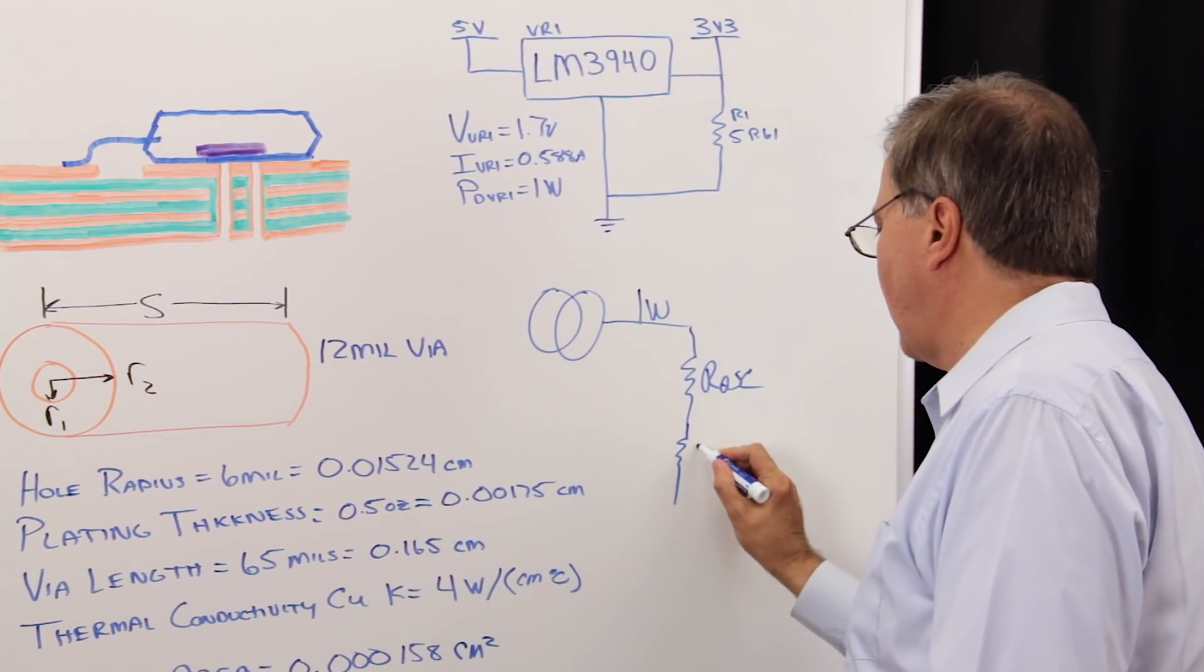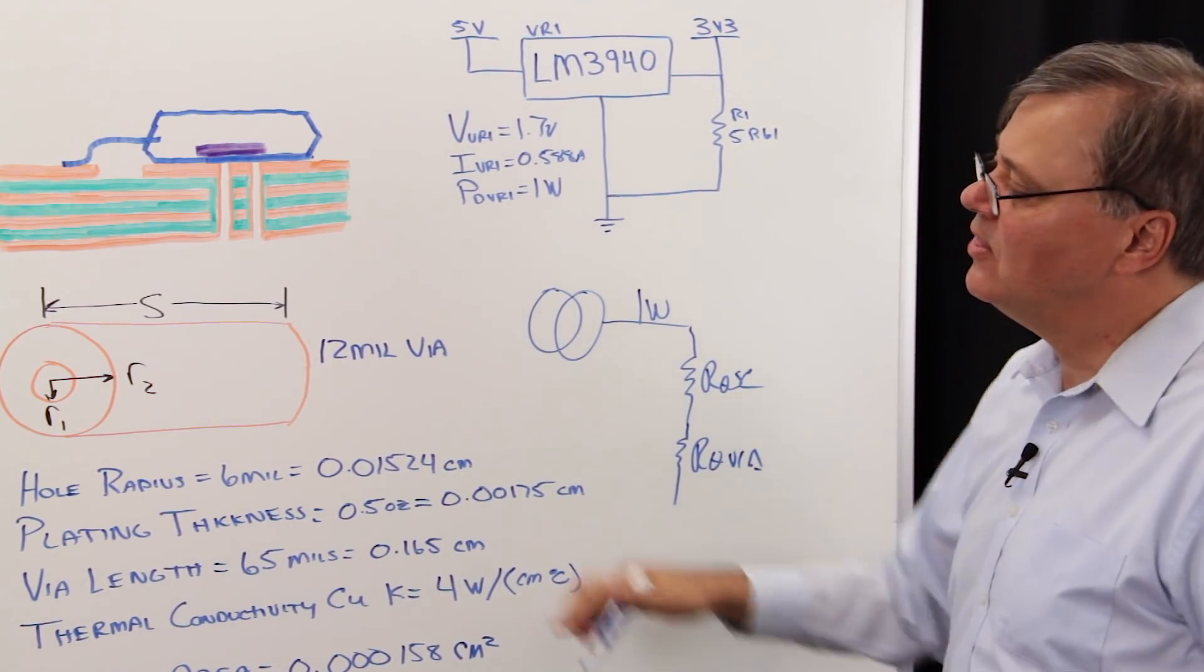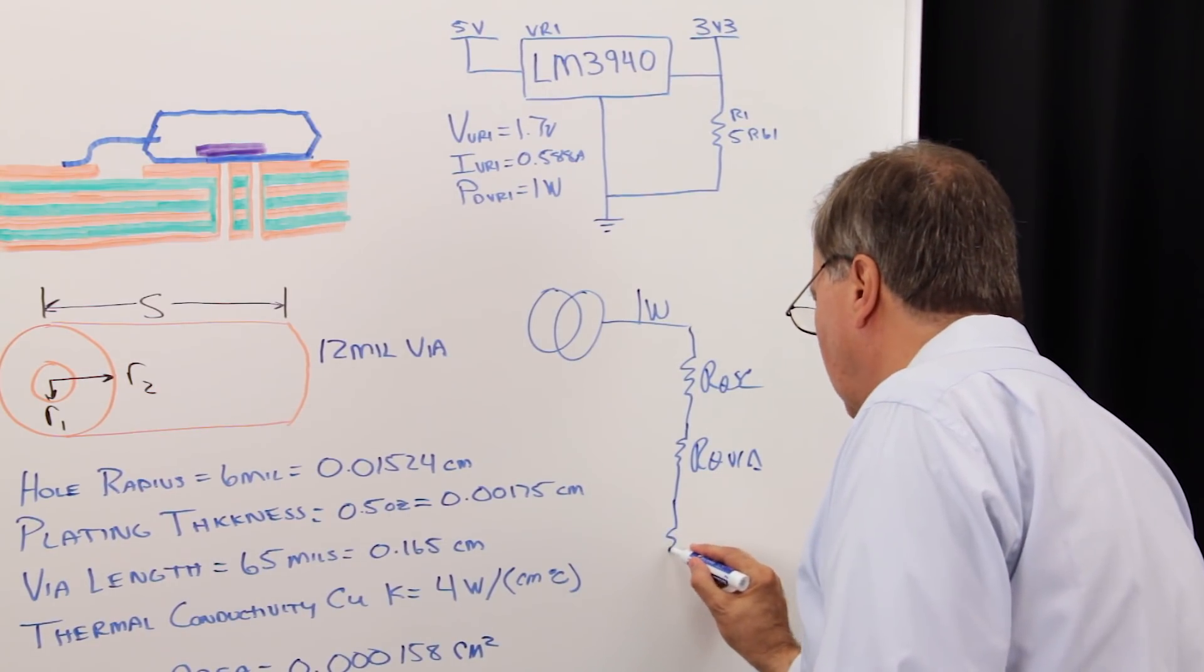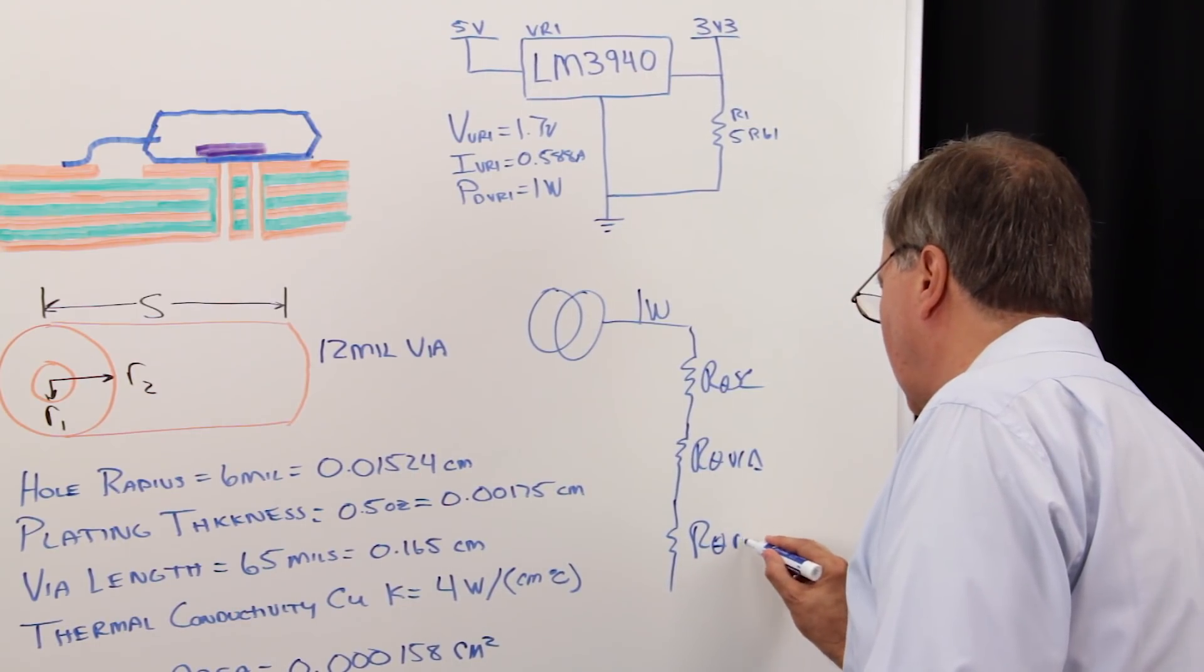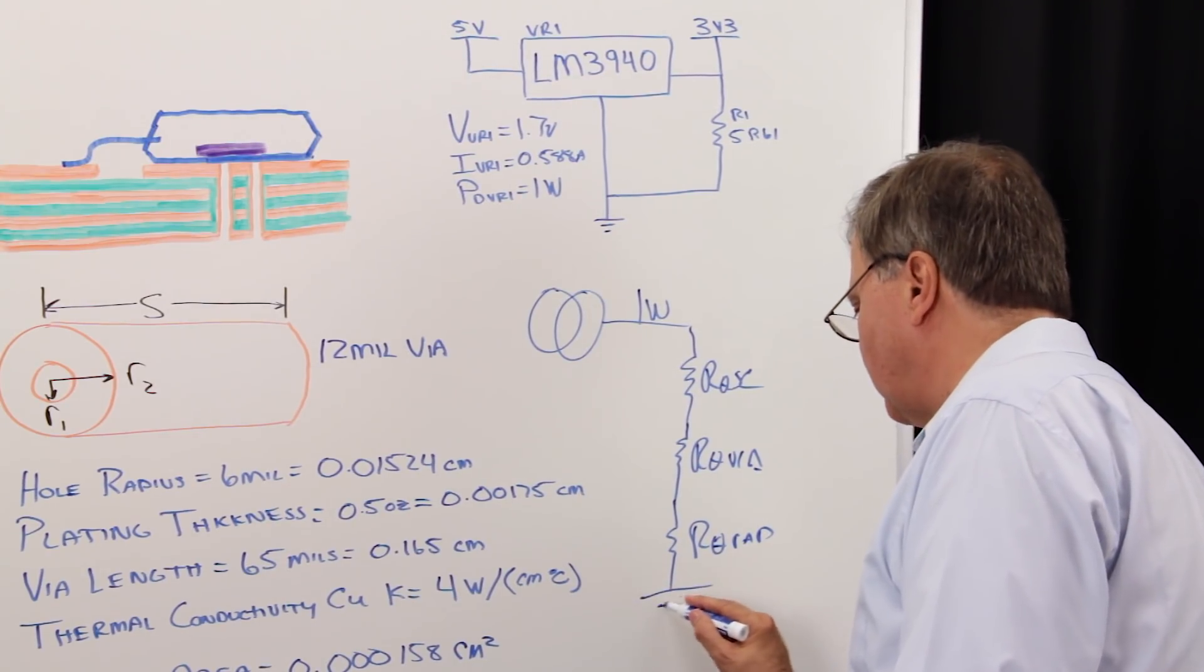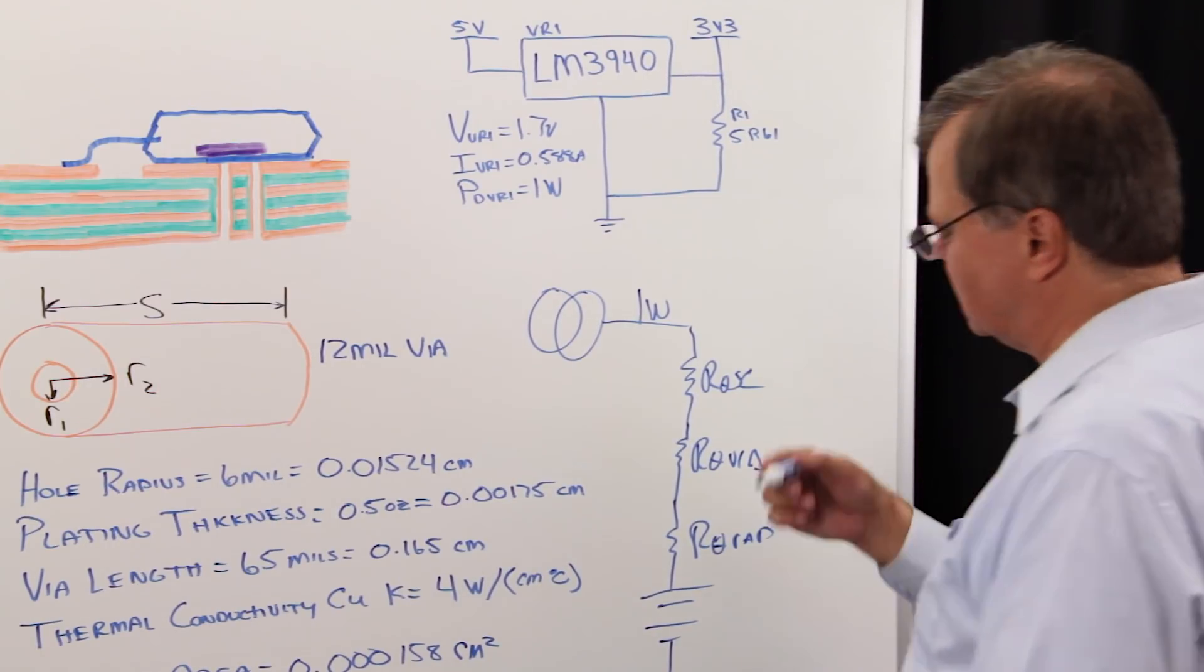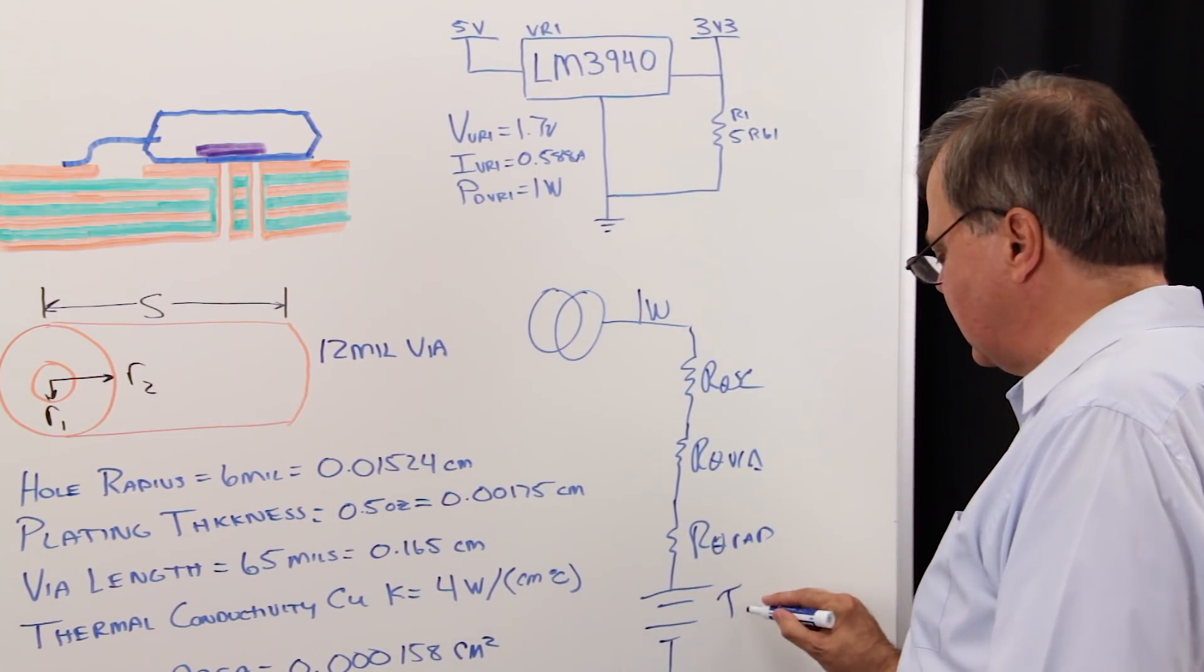Then we have the via barrels here, and I'll call that R theta via, and then we have the radiating plane on the secondary side. I'll call that R theta rad. Then we have our ambient temperature, which, just like in the past, we've been modeling as a voltage source that biases us up to the ambient temperature, and we will call that T ambient.